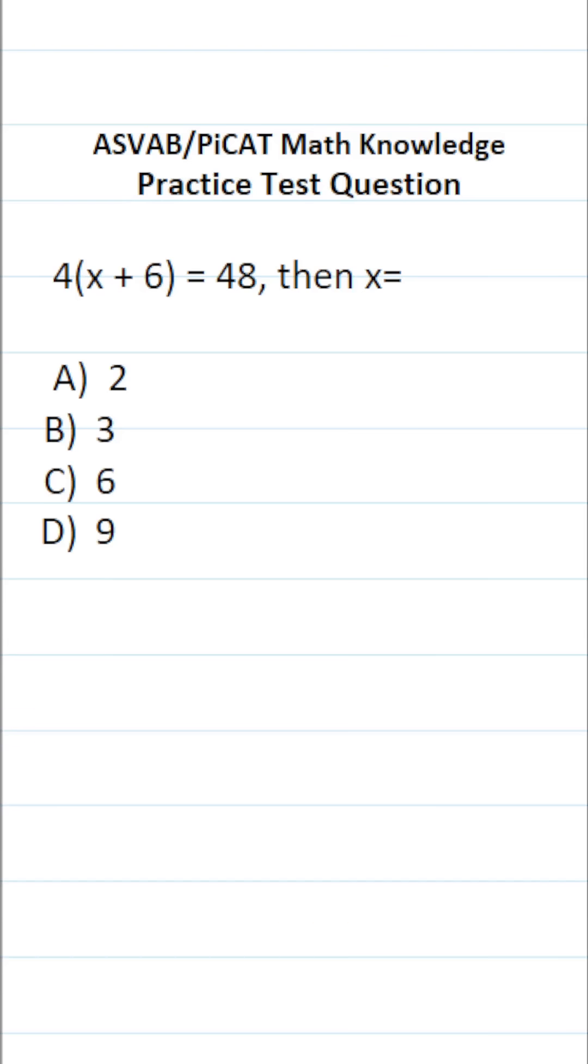This math knowledge practice test question for the ASVAB and PyCat says 4 times x plus 6 equals 48, then x equals. So in other words, we're going to be solving the equation 4 times x plus 6 equals 48 for x.